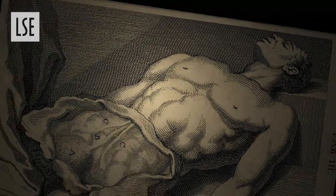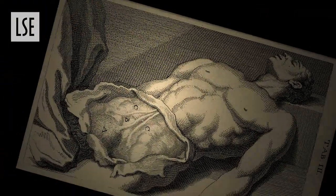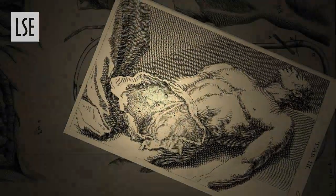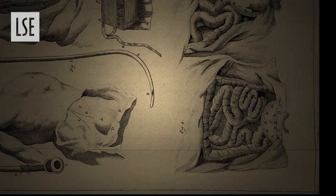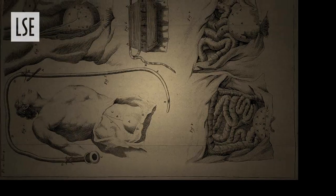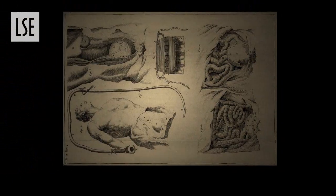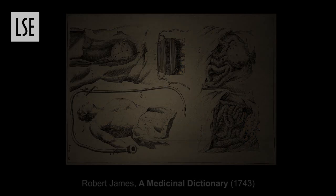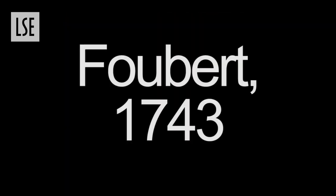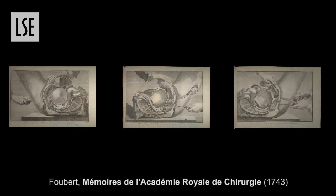Those prints were heavily copied. One example is James Dictionary, where you can see the mirror figure of the Gelsildun print. They were also translated into different languages and then adapted. Foubert, in the Mémoire de l'Académie royale de chirurgie in 1743, used different prints to show the sequence of events.